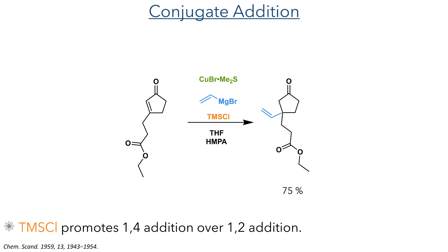In the next step of the synthesis, a conjugate addition using an organocopper reagent was carried out. This reaction required significant optimisation and it was essential that the Grignard reagent was added last after all other reagents had been mixed together. This included TMS chloride, which promotes 1,4-addition over 1,2-addition. The role of TMS chloride in this reaction has been studied extensively, yet there is still uncertainty about its precise role. These studies used organolithium precursors instead of Grignard reagents, though it is likely that the mechanisms are similar.